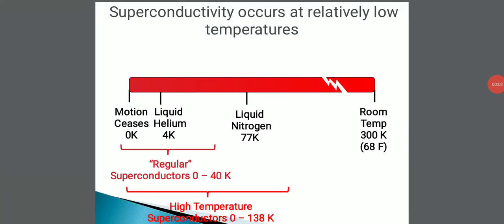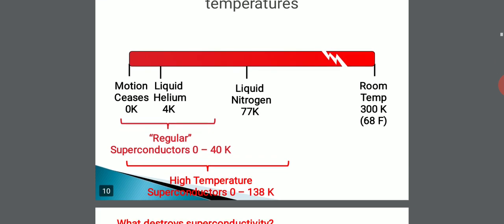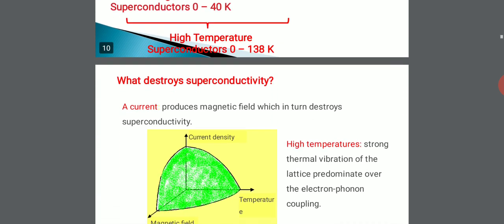This superconductivity phenomena occurs at relatively low temperatures. If you see, the regular superconductors exhibit their transition temperature from 0 Kelvin to 40 Kelvin, and there is another category called high temperature superconductors whose transition temperature ranges from 0 Kelvin to 138 Kelvin.